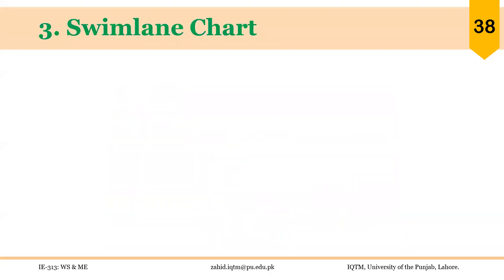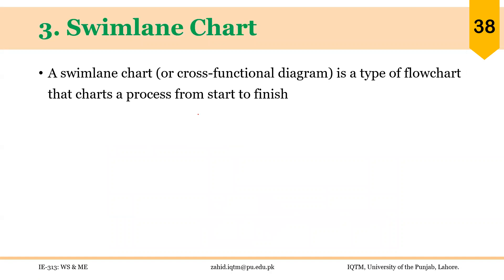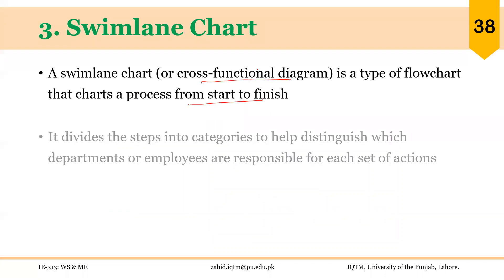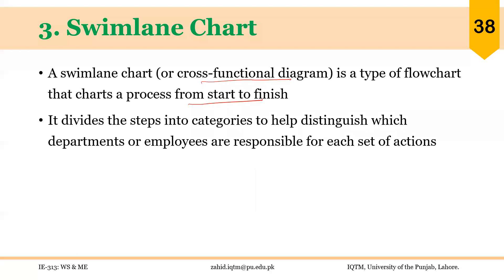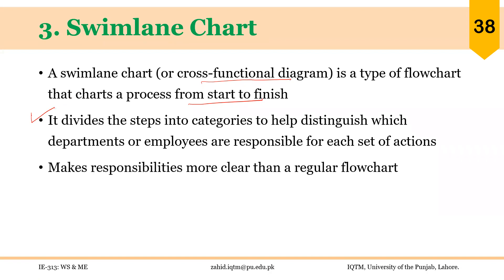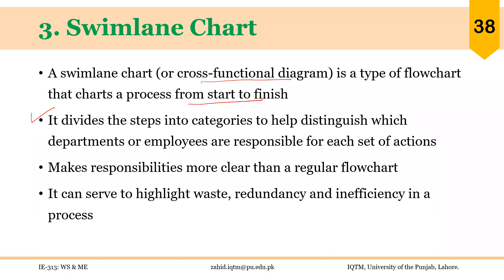A swim lane chart or cross-functional diagram is a type of flow chart that charts a process from start to finish. It divides the steps into categories to help distinguish which departments or employees are responsible for each set of actions — something additional that other charts don't capture. It makes responsibilities more clear than a regular flow chart, and it can serve to highlight waste, redundancy, and inefficiency in a process. We can see if some step is being repeated in two departments when it could be performed by just one.